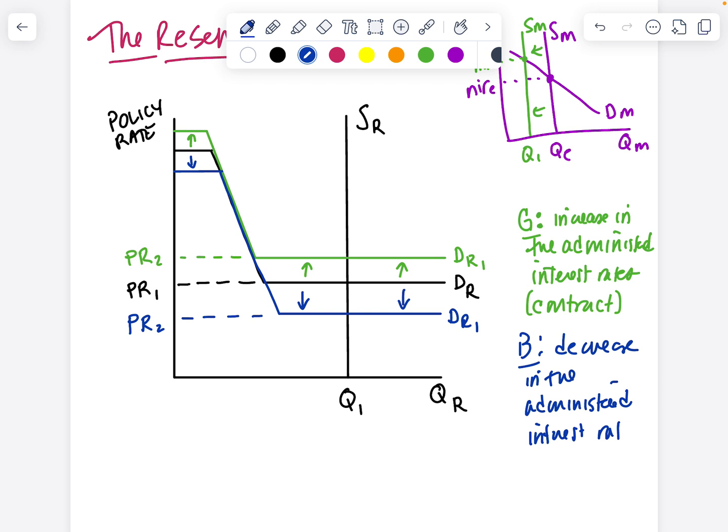One of the things that's frustrating to me as a student of this is that we call these the administered interest rates, but on the graph we don't call them that. We call it the policy rate. As a teacher of this and also as a student of this, it frustrates me because I feel like they should be the same words.